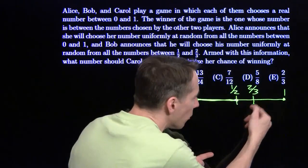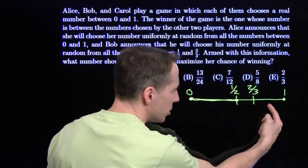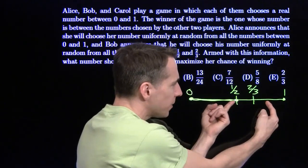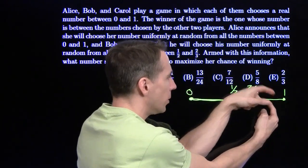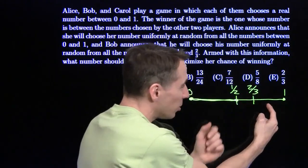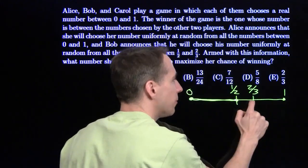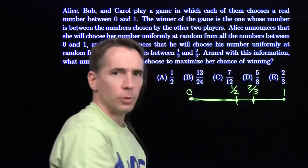But what happens if she chooses between 2/3 and 1? Now Bob's going to be on the left, so we need Alice to be on the right. We get as much Alice on the right as we can by moving Carol to the left as far as possible in this interval, dropping her at 2/3.